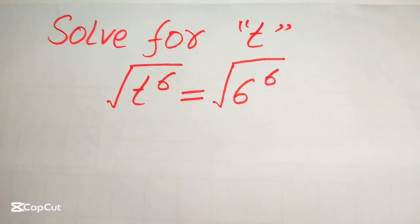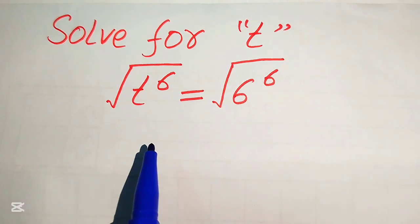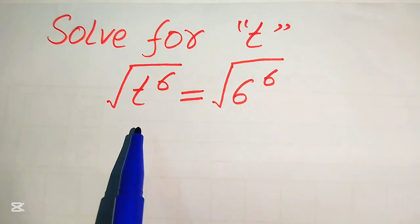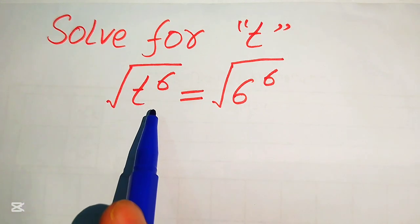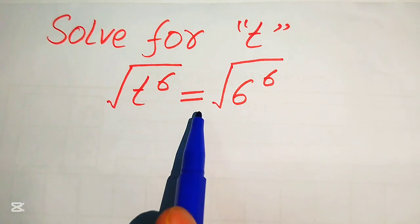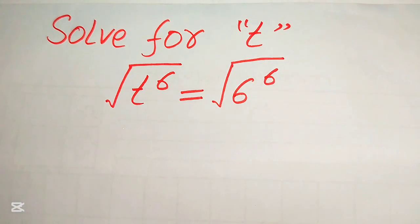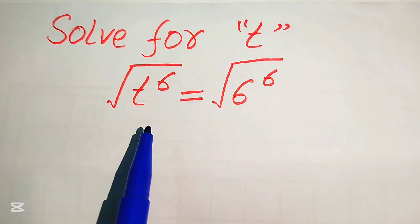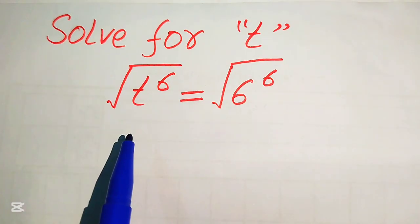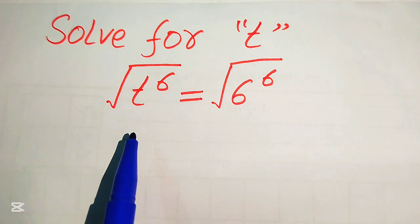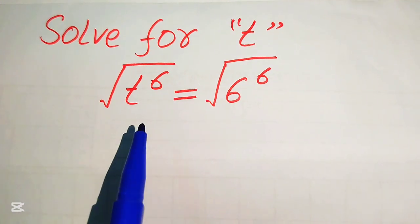Hello everyone, today I want to show you how to solve this problem for the values of t. Here we have t to the power of 6 and its whole square root equals to 6 to the power of 6 and its whole square root. Our given problem is written in radical form, so first we need to convert this radical form into the exponential form.